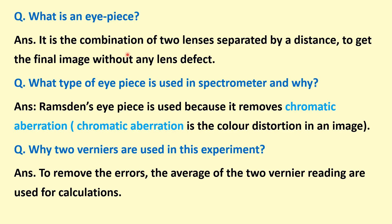What is an eyepiece? An eyepiece is a combination of two lenses separated by a distance to get the final image without any lens defect. What type of eyepiece is used in a spectrometer and why? A Ramsden eyepiece is used because it removes chromatic aberration — the color distortion in an image. Two vernier scales are used in this experiment so that the average of the two vernier readings removes errors in the calculations.